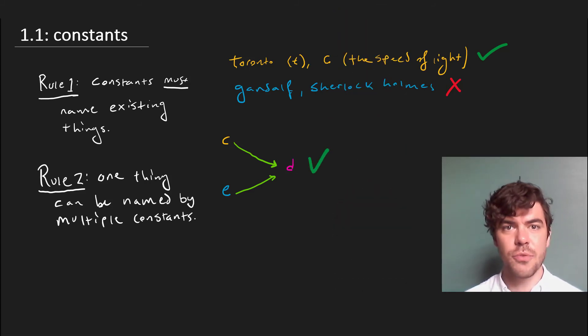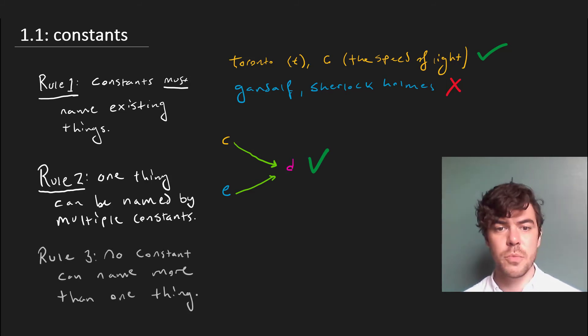What's not okay, and this is our fourth rule, is for one constant to name more than one thing. So imagine we have two items in our domain, D1 and D2, and these do not equal each other. They're completely distinct objects, but they're both named by C. This is unacceptable.